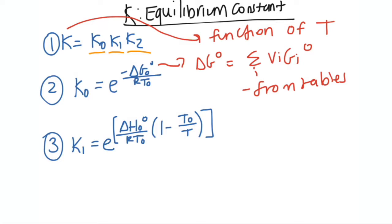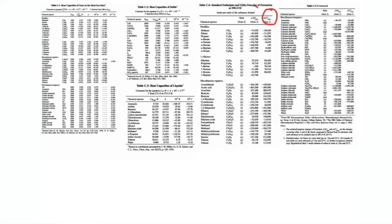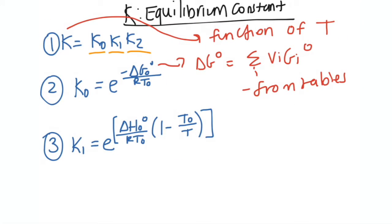And then for number three, same thing again for the ΔH°. Instead of going to the g on the table, you're going to be going to the h. Same thing, ΔH° is equal to sum i νi·hi°. Not too hard.